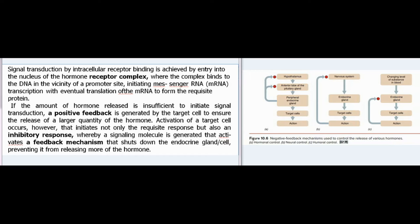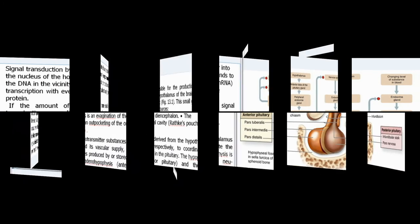If the amount of hormone released is insufficient to initiate signal transduction, a positive feedback is generated by the target cell to ensure the release of a larger quantity of the hormone. Activation of a target cell occurs, however, that initiates not only the requisite response but also an inhibitory response, whereby a signaling molecule activates a feedback mechanism that shuts down the endocrine gland or cell, preventing it from releasing more of the hormone.